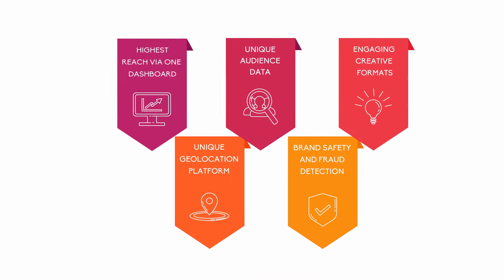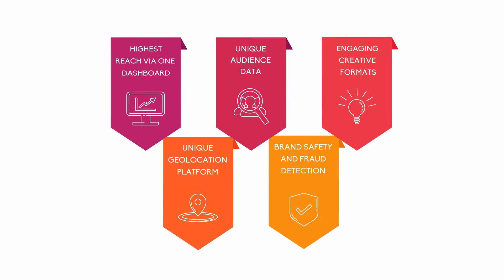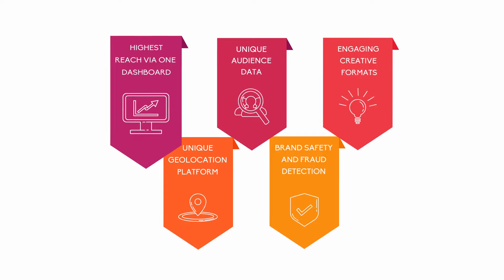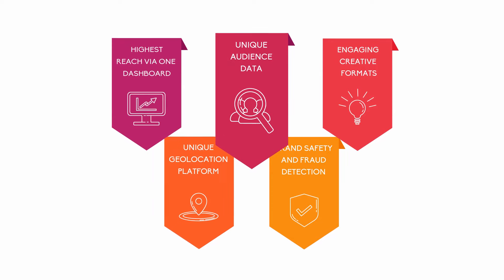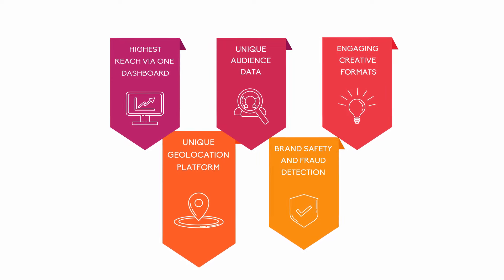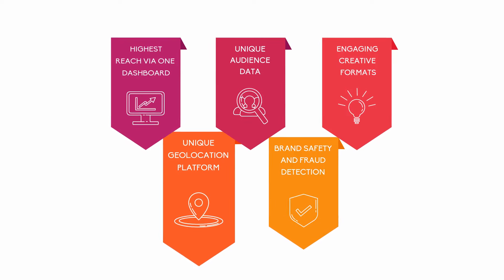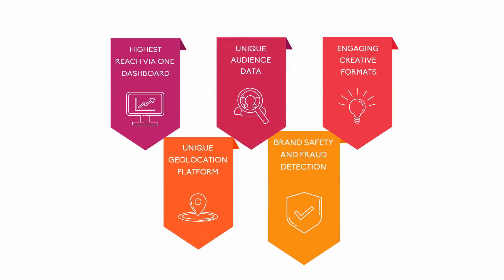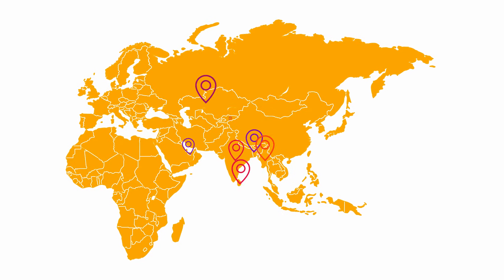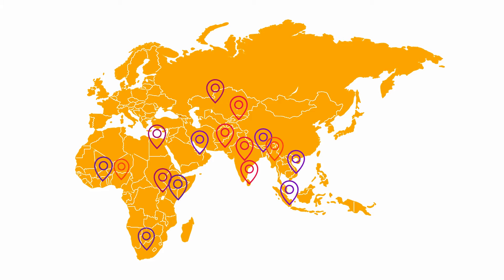Eskimi DSP has five unique key elements for advertisers: highest reach via one dashboard, unique audience data, engaging creative formats, unique geolocation platform, and brand safety and fraud detection. You can reach over 1 billion active consumers worldwide in more than 120 countries.